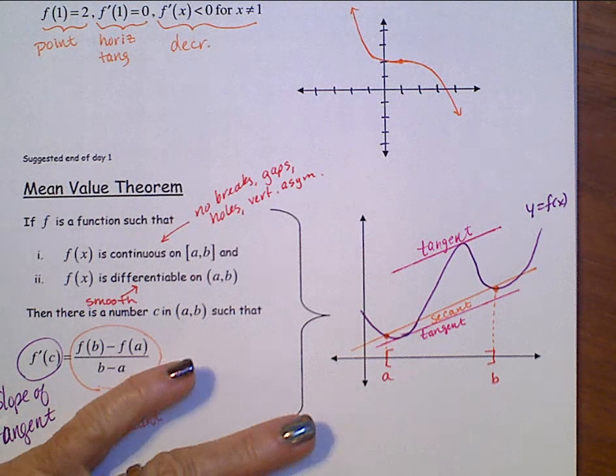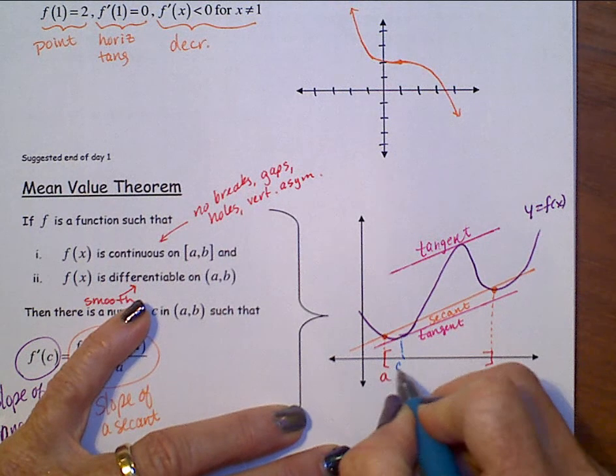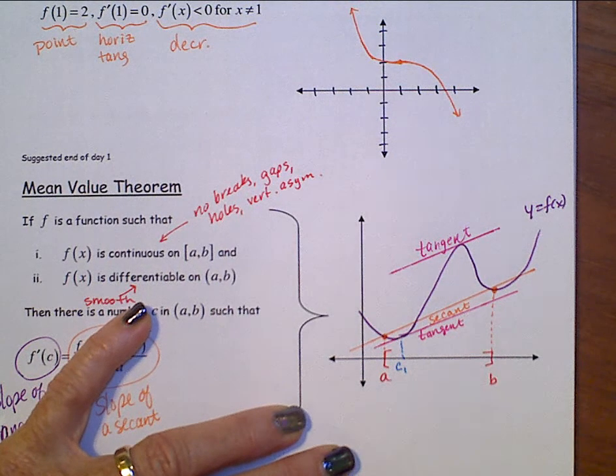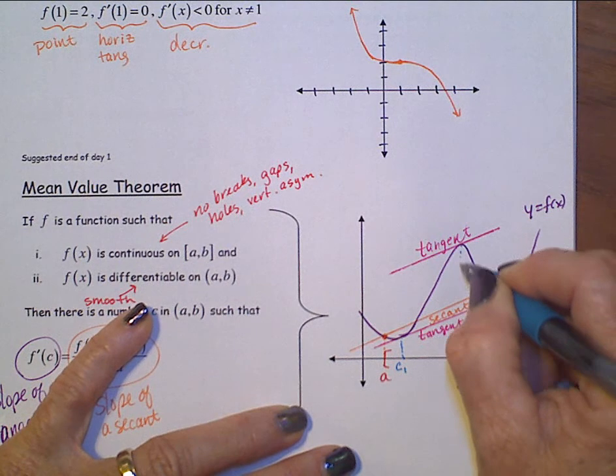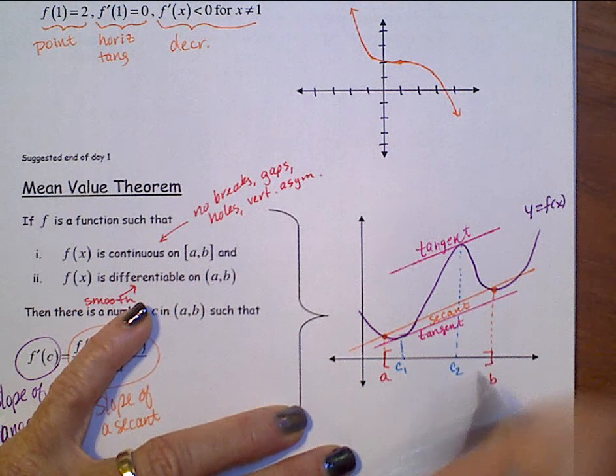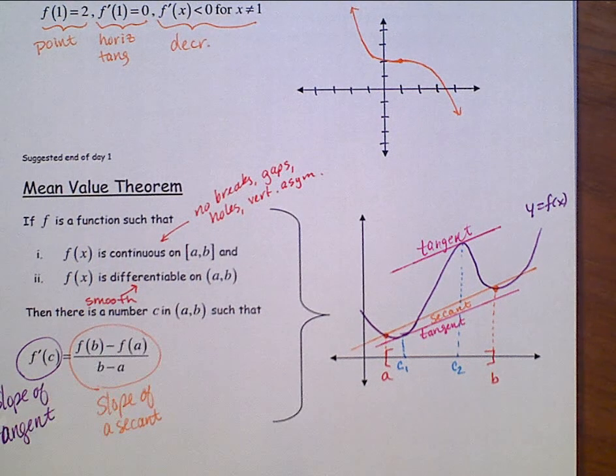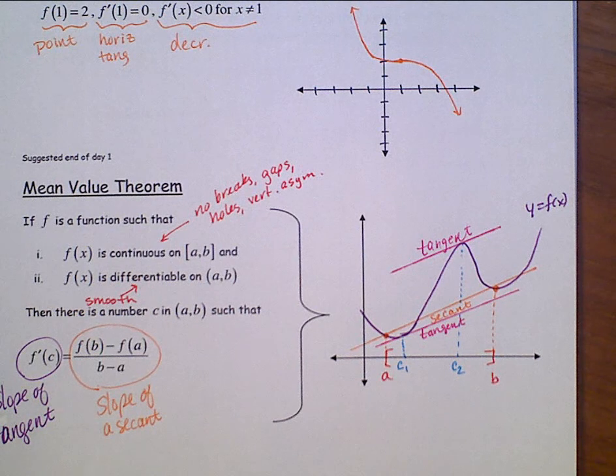So, we will actually have two c values here. We would have some c1 there and another c value over here, c2. And, on the next page, we will get some examples of using that mean value theorem.